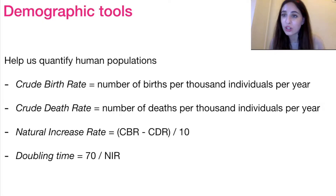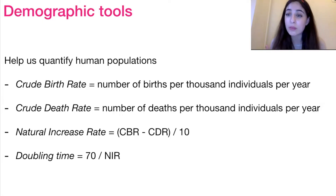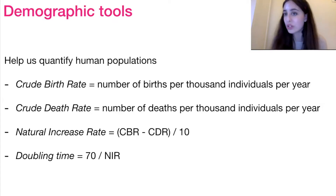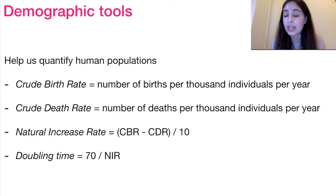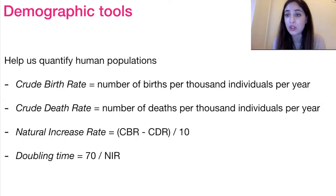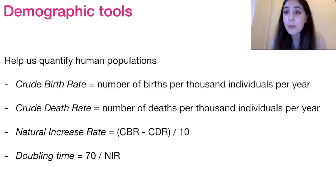The next thing I want to introduce are demographic tools. These are calculations we can work out for different populations to see how they're doing in terms of development — they help us quantify human populations. These are the four that the IB want you to be able to calculate, starting with crude birth rate. Crude birth rate is the number of births per thousand individuals per year.